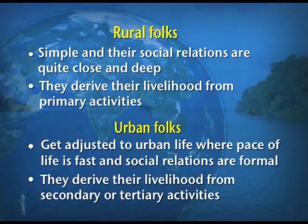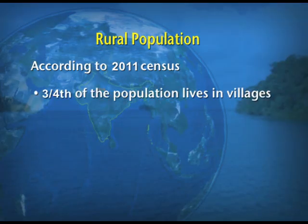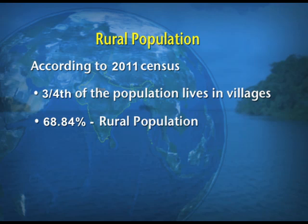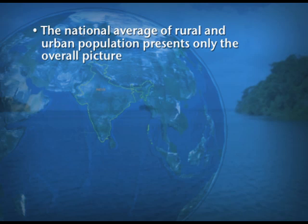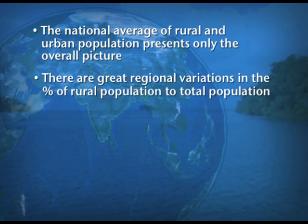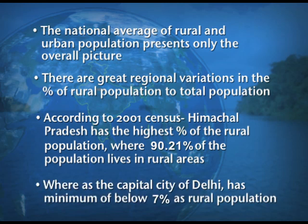India is primarily a country of villages — three-fourths of the population lives in villages. According to the 2011 census, 68% is the rural population and 31% is the urban population. There are great regional variations: Himachal Pradesh has the highest rural population at 90.21%, whereas Delhi has the minimum of only 7% rural population.